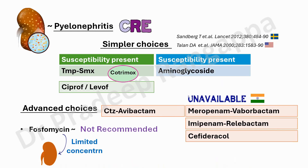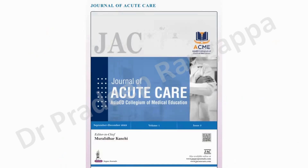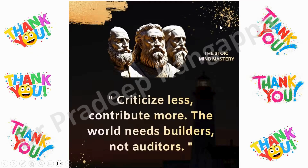So these are the choices, friends. The key take-home message: do not use colistin for CRE in hydronephrosis — stick to simpler drugs if there is susceptibility. If there is susceptibility to trimethoprim-sulfamethoxazole, which is seldom used in the ICU, consider it. If there is no susceptibility, the choice becomes limited to ceftazidime-avibactam, ciprofloxacin, or aminoglycosides. I'll come with more IDSA recommendations as snippets to help trainees with good antibiotic stewardship. Thank you friends — please submit your work to the Journal of Acute Care and visit my website for this lecture.